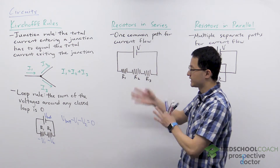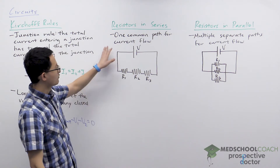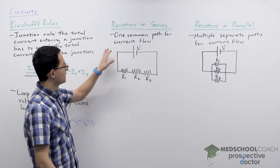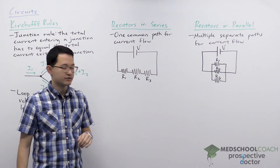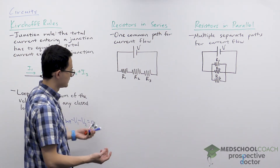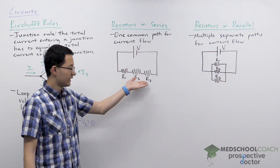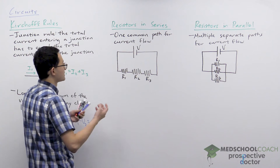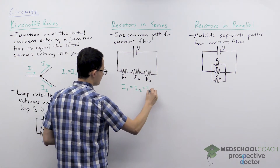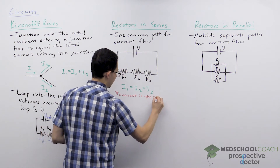Now let's apply these rules to resistors connected in different ways. The first way is to connect them in series, which means there is one common path for current flow. If current passes through one element in series, it passes through all of them. So if two amps passes through the first resistor, two amps also passes through the second and third resistors. When dealing with circuit elements in series, the currents are all equal: I1 equals I2 equals I3. Current is the same in series.